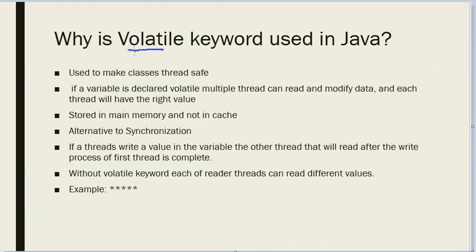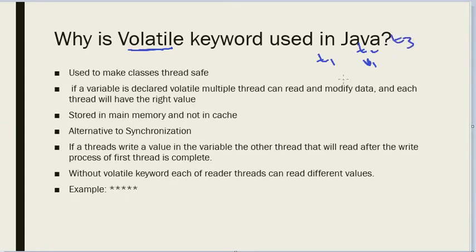The volatile keyword is used in Java to make classes thread-safe. Thread safety means that if there is a variable — it can be a data type or an object — and it is being accessed by thread one, thread two, and thread three, and one of the threads is writing to this variable or object, we have to make sure the other threads behave correctly.